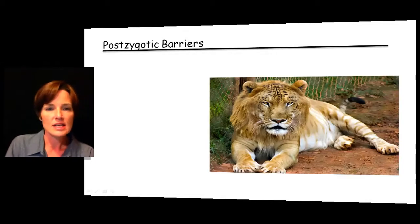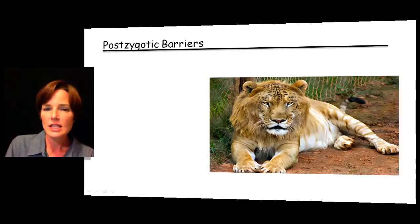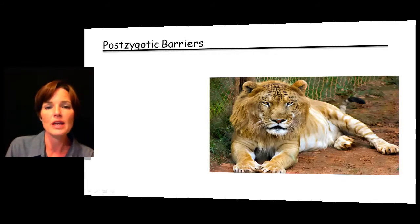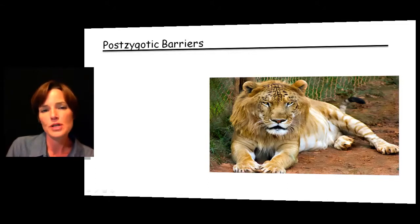We also have what we call postzygotic barriers — after formation of the zygote. Here we're saying that you do actually get the combining of the egg and the sperm, so you are going to get an initial zygote. But that doesn't necessarily mean you're going to get a viable offspring. Keep in mind that the key here is not only that mating takes place, but that we also get a viable offspring — one that's going to survive and be able to produce offspring of its own.